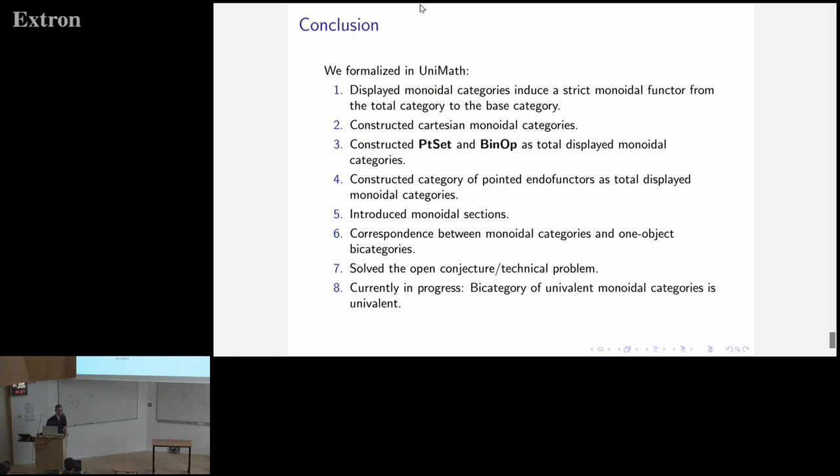A more general example is the category of pointed endofunctors, and we also constructed this. We have introduced these monoidal sections. We have showed, or constructed the correspondence, between monoidal categories, and one object bicategories. And this bijection, which I mentioned in the beginning, we were able to prove this. And then what is currently in progress, is that we are showing the bicategory of univalent monoidal categories is again univalent.